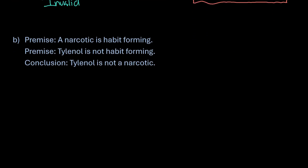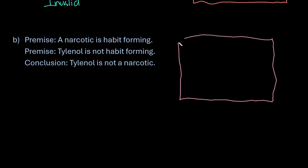Let's look at another example. Again we're going to start with drawing a box to represent all things that can happen. Our first premise is that a narcotic is habit forming. Our second premise is that Tylenol is not habit forming, and then we want to see does it follow logically that Tylenol is not a narcotic.